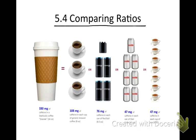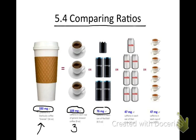For comparing ratios, here's an example: I have a grande at Starbucks and it has 330 milligrams of caffeine. I want to compare that to a regular cup of coffee, which only has 108 milligrams. To make these ratios equal, I would need three cups of regular coffee to equal one Starbucks grande. Each can of Red Bull only has 76 milligrams of caffeine, so you'd need about four and a half cans of Red Bull to equal that one cup of Starbucks coffee.